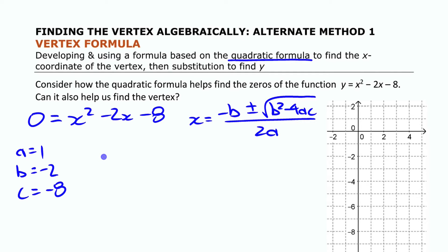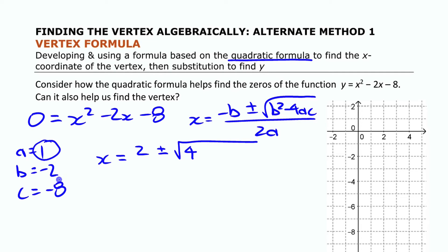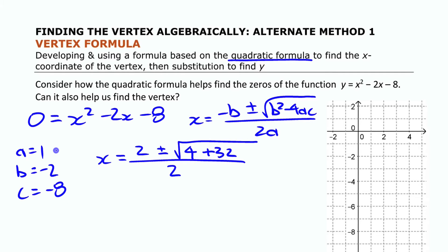So if we write it out, x = −(−2) = 2, plus or minus the square root of b² = (−2)² = 4, minus 4ac: 4 × 1 × (−8) = −32, so it's minus negative 32, which is plus 32. The denominator is 2a = 2. Skipping a few steps, we end up with (2 ± √36) / 2, which is (2 ± 6) / 2.